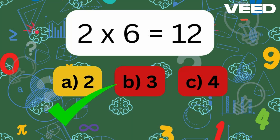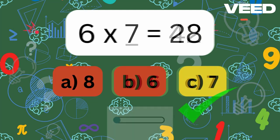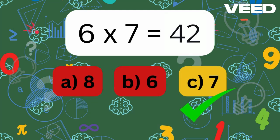2x6 is equal to 12. 6x what is 42? 6x7 is equal to 42.